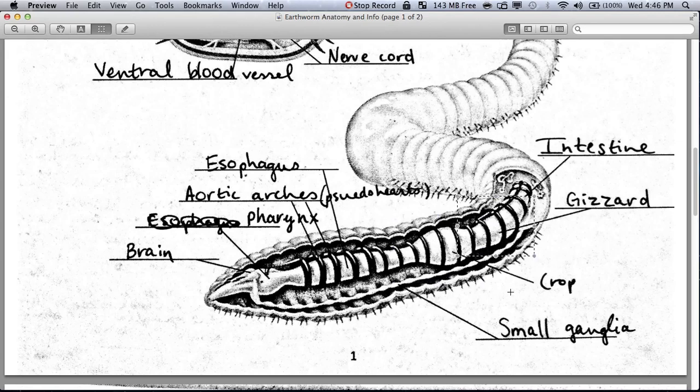This is the crop, where it's stored before most of the digestion occurs. And then it goes to the gizzard, which is bulgier than the intestine. It's hard to discern these things, but when I dissected one, you could tell the difference between the esophagus, the pharynx, the gizzard, and the intestine and the crop. The gizzard is a little thicker than the intestine, a little bulgier. This part of the earthworm is in charge of mechanical digestion.